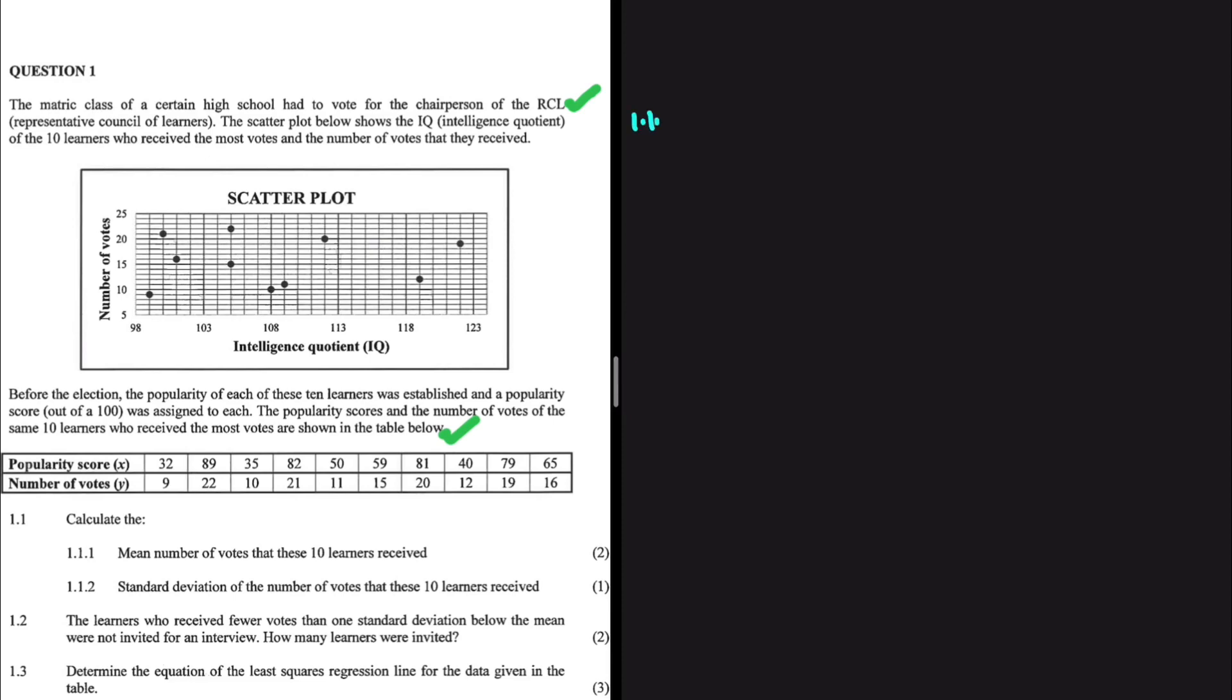And then the first question, 1.1, 1.1.1. Let's calculate the mean of the number of votes that these learners received. So I'm not going to do anything manually. I'm going to calculate using my calculator. So let me go ahead and do that.